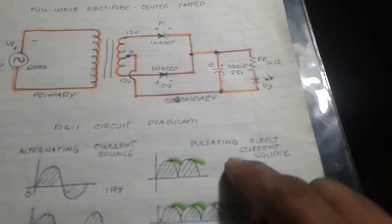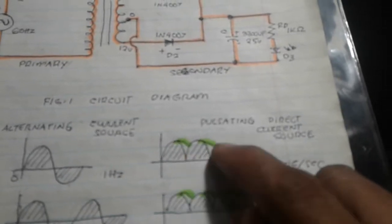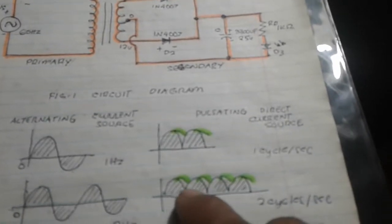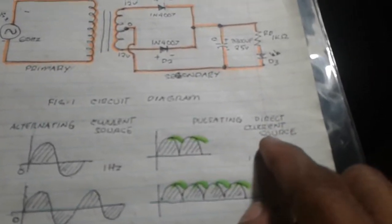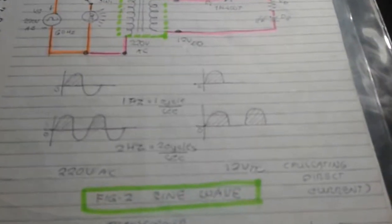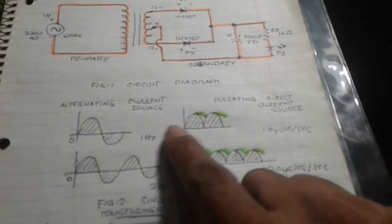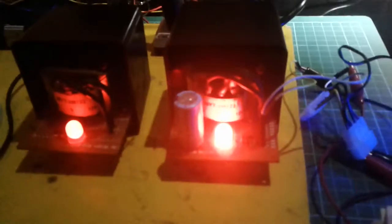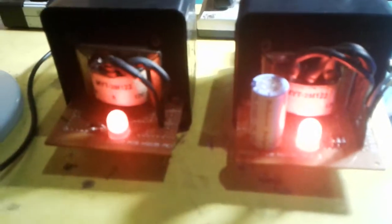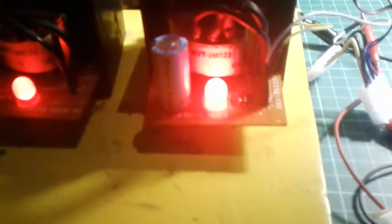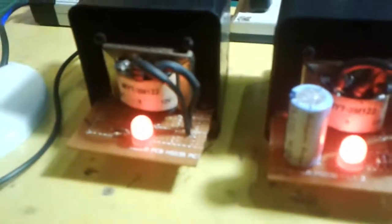So we are no longer having a pulsating direct current. Unlike the half wave rectifier, we now have a smoother current waveform. During one cycle and two cycles per second, the full wave center-tap produces a more consistent output. Let us see what's in here — this one appears to be pulsating, and this one is steady.